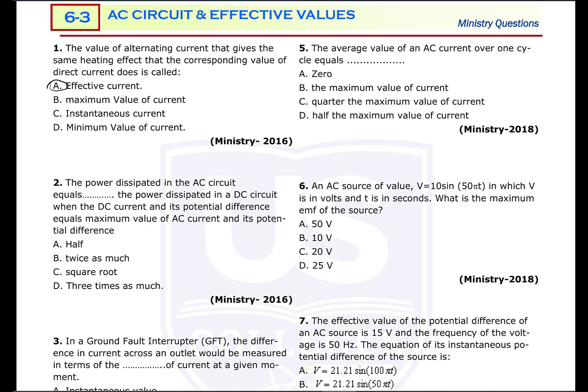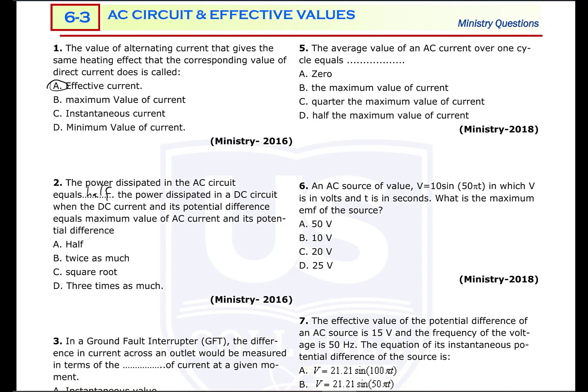Power dissipated in an AC circuit equals the power dissipated in a DC circuit when the DC current and its potential difference equal the maximum value of AC current and its potential difference. So when both AC and DC circuits have equal maximum current, power dissipated in an AC circuit is half of the power dissipated in a DC circuit, because AC circuit is maximum only at some instant, but DC circuit is always at maximum.